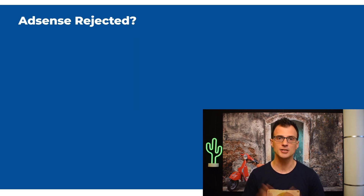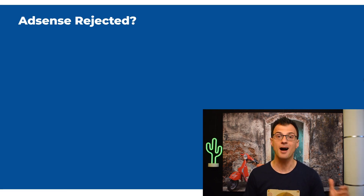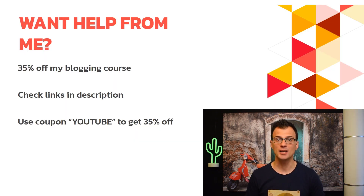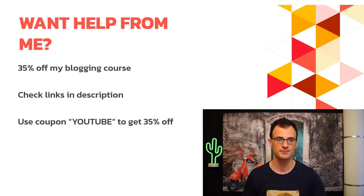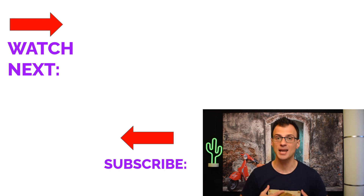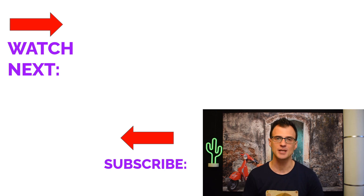If you've been rejected for AdSense the first time you apply, don't despair — just continue with this method, and once your site starts getting traffic there will be a high likelihood of getting accepted further down the track. If you'd like one-on-one help from me with blogging, affiliate marketing, and AdSense, check the links in the description — I've currently got a 35% discount on my blogging mentorship and course. Use coupon code 'youtube' to get your 35% discount. Thank you for watching — my name is Greg Kononenko, subscribe to my YouTube channel if you're not yet a subscriber, and I'll see you in the next video.